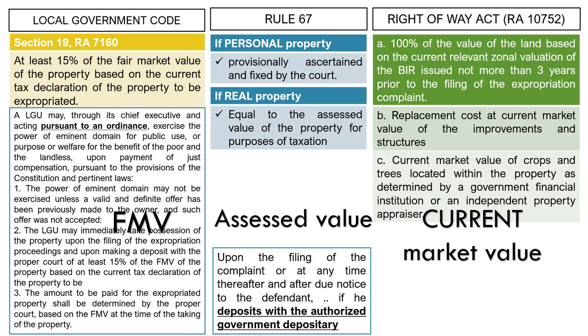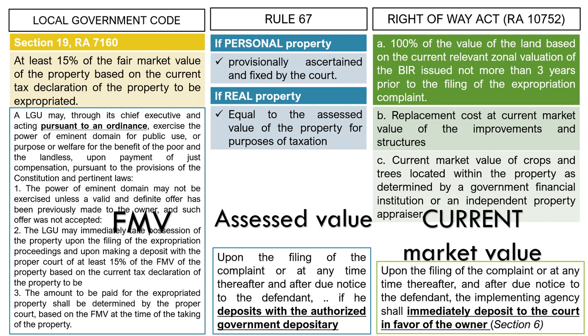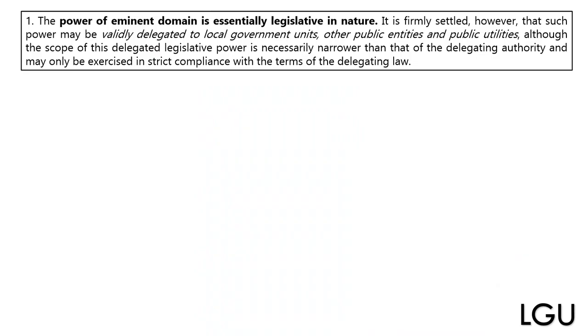There is also a difference in where you deposit: under Rule 67, you deposit with the authorized government depository; under RA 10752, you deposit with the court in favor of the owner.